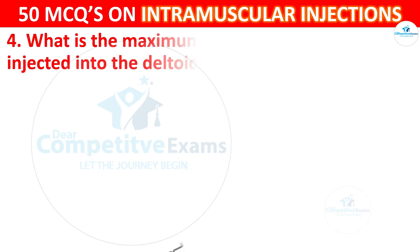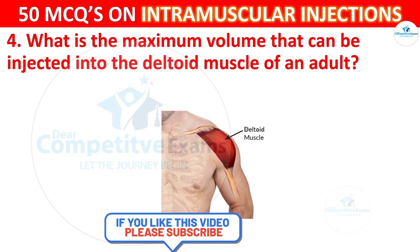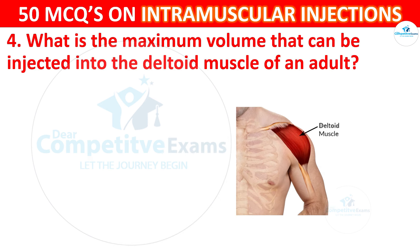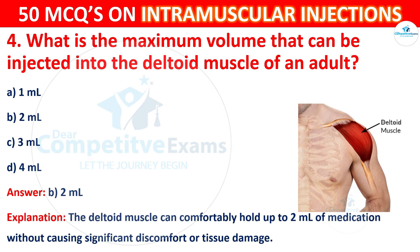Question 4: What is the maximum volume that can be injected into the deltoid muscle of an adult? Options are: 1 ml, 2 ml, 3 ml, or 4 ml. The correct answer is B, 2 ml. The deltoid muscle can comfortably hold up to 2 ml of medication without causing significant discomfort or tissue damage.